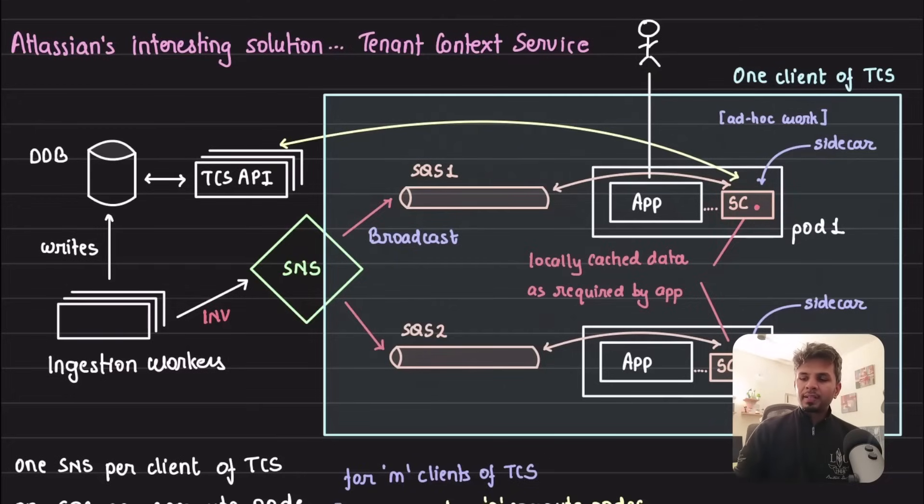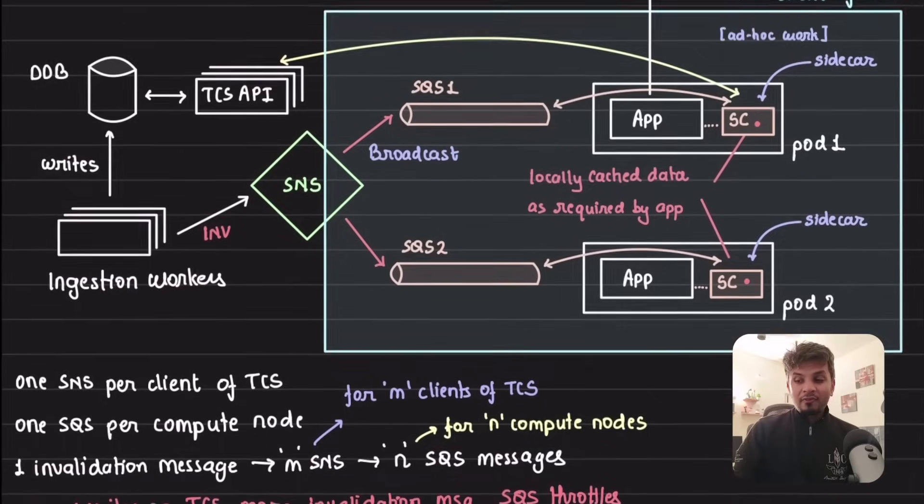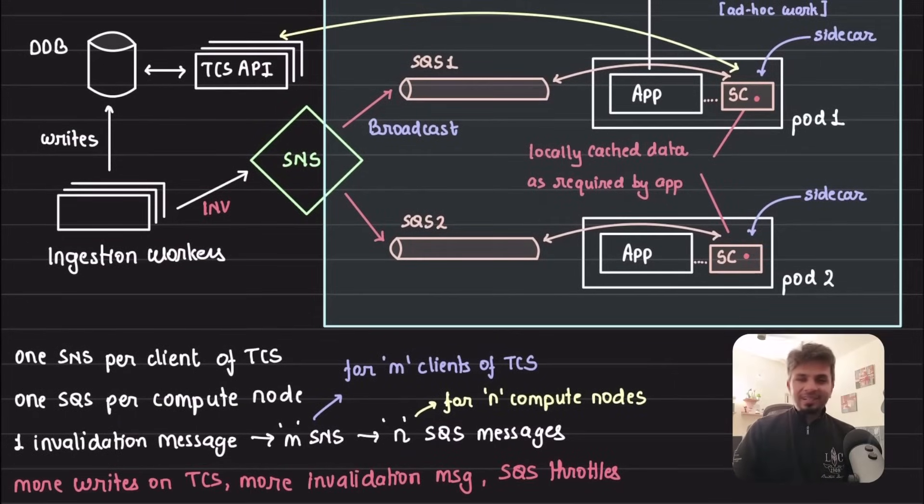This way when the subsequent request comes in for the key which is invalid, which means it's not there in the cache, your sidecar will go to TCS API, get the data, cache it again, and continue its processing. This is the flow. Very obvious, extremely obvious.